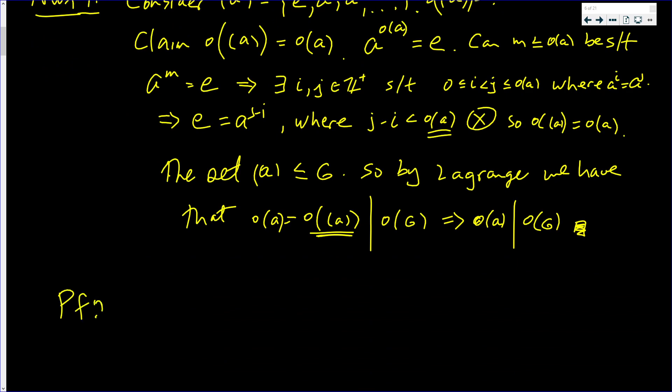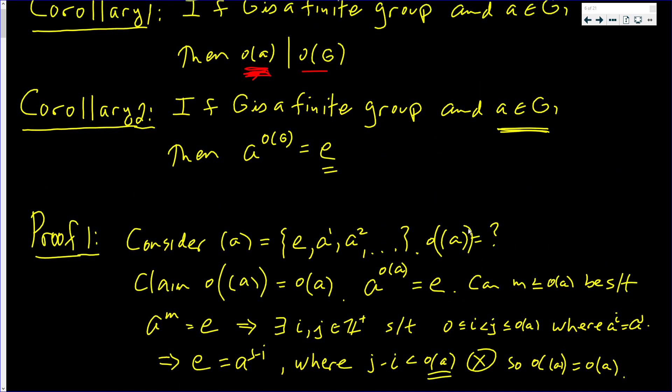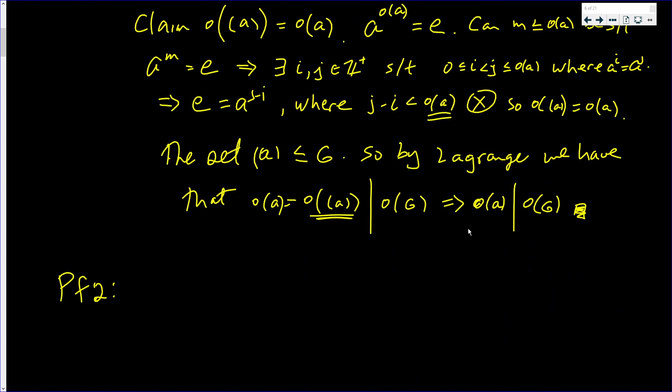The proof of number two. Number two says that if G is a finite group and A is in the group, then A to the order of G must equal E. A raised to the order of G must equal E.